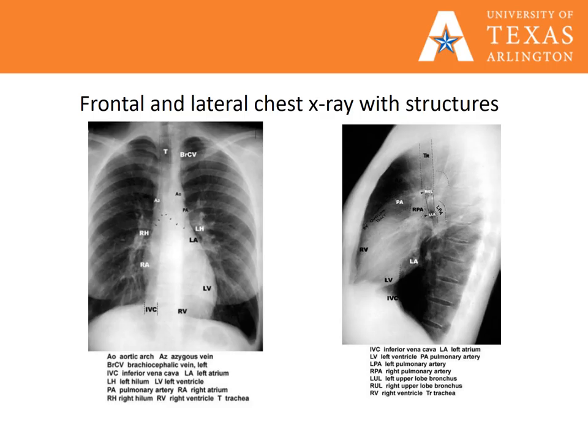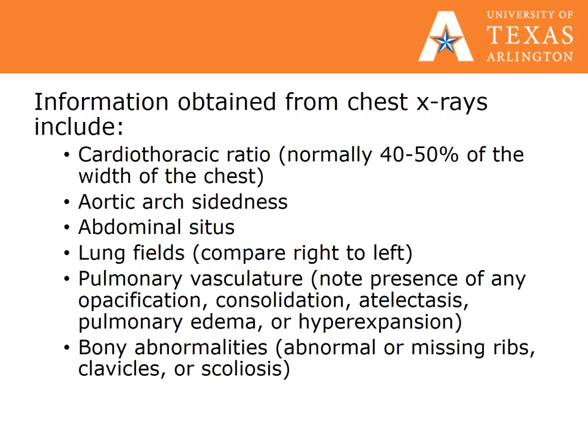These radiographs show the frontal view and the side view of the thoracic structures. Information obtained from chest X-rays includes cardiothoracic ratios, which are normally 40% to 50% of the width of the chest, aortic arch-sidedness — right rather than the normal left — and abdominal situs, or transposition of the stomach and liver in the abdomen.